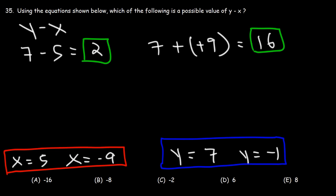Now, let's see what happens when y is negative 1. When y is negative 1, x could be 5. So we have negative 1 minus 5, which is negative 6. Another possible answer.